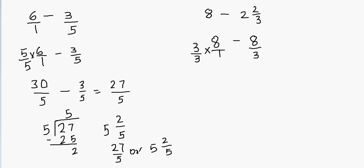Now I multiply the numerators and denominators. 3 times 8 gives me 24, and 3 times 1 gives me 3. So I have 24 over 3, then the subtraction sign, then 8 thirds. Since I have the same denominators, I can subtract the numerators. 24 minus 8 gives me 16. We never subtract the denominators, so the denominator remains 3. The answer is 16 over 3.